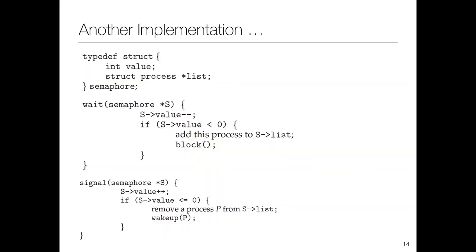There is another implementation which is a one-to-one mapping to the original semaphore semantics. It has a value and a process list. It first decrements the value by one; if the value is negative, it adds the process to the list and blocks. At a higher abstraction level this seems straightforward, but it's unclear why Linux uses something closer to the previous implementation rather than this simpler one.